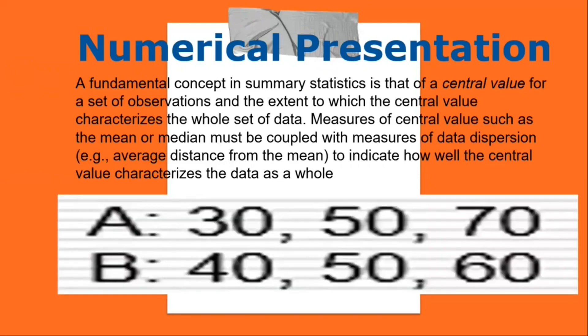Consider two sets of data: A = {0, 30, 50, 70} and B = {40, 50, 60}. The mean of both data sets is 50. But the distance of the observations from the mean in data set A is larger than in data set B. Thus, the mean of data set B is a better representation of the data than is the case for set A.